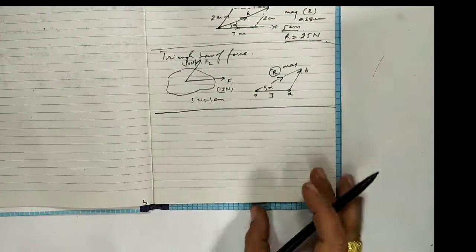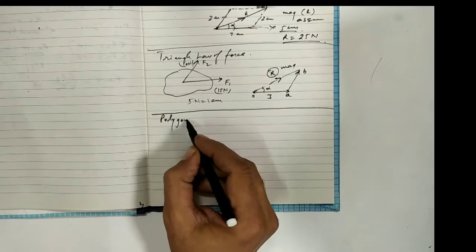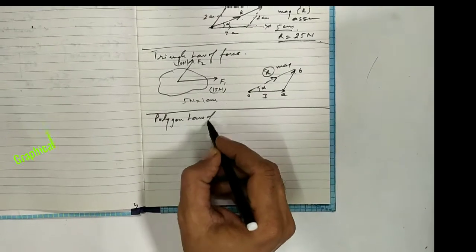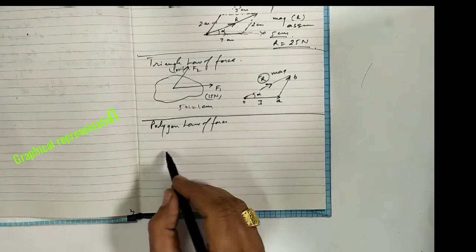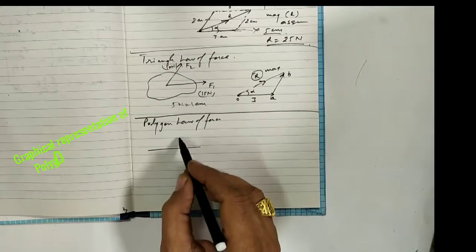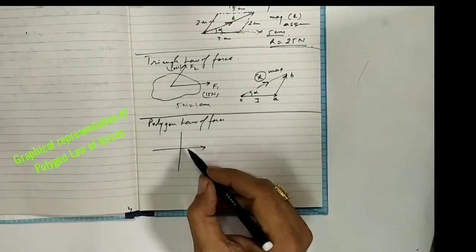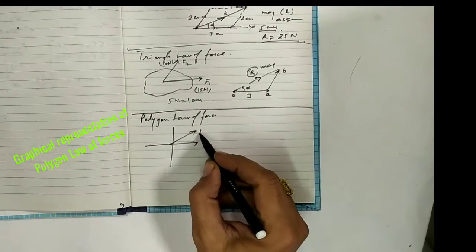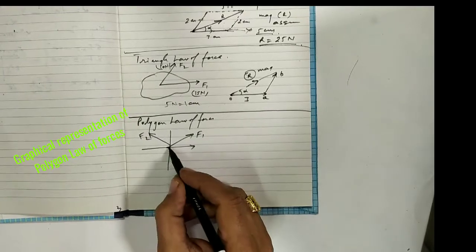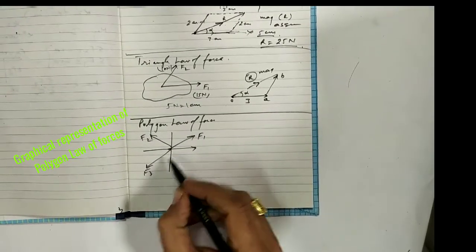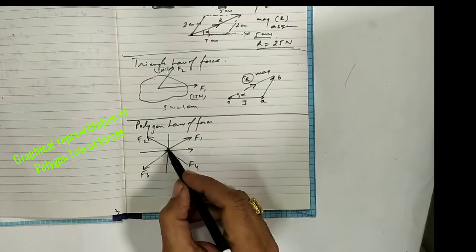Next and last is the polygon law of forces. The polygon law applies when a number of forces are acting on a body — for example F1, F2, F3, and F4.